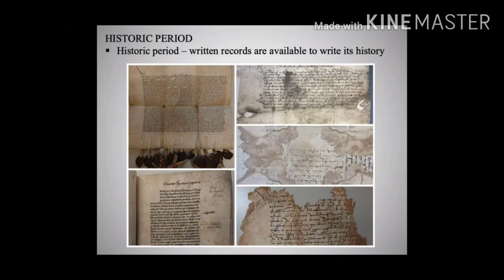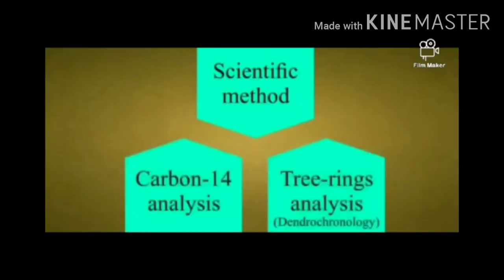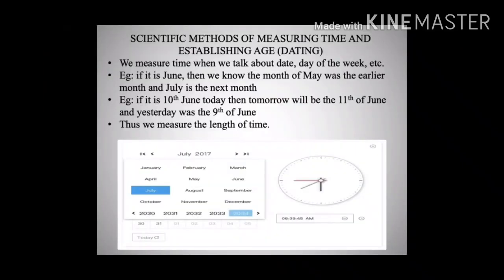Scientific methods such as carbon-14 analysis, tree-ring analysis, and dendrochronological methods are used for measuring time and establishing age dating. We are actually measuring time when we talk about today's date, day, or week. These methods allow us to identify a particular day, month, or year with respect to an earlier or later day, month, or year. For example, if it is June, then the earlier month was May and the next month will be July. If today it is the 10th of June, tomorrow will be the 11th of June and yesterday was the 9th of June.